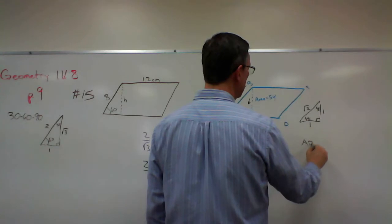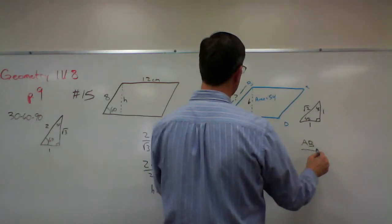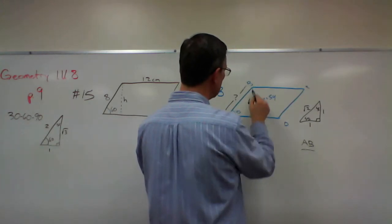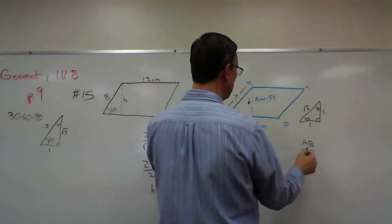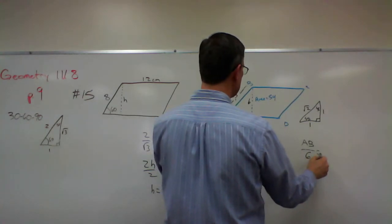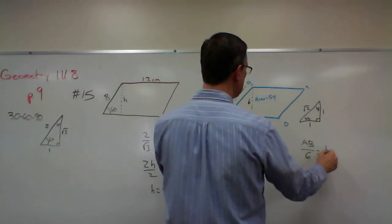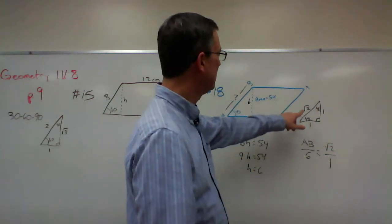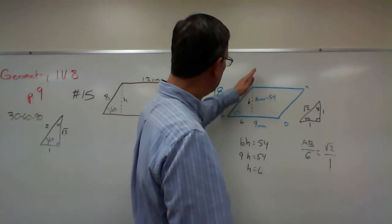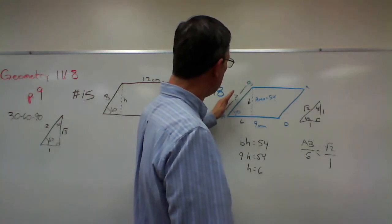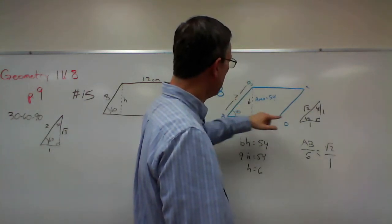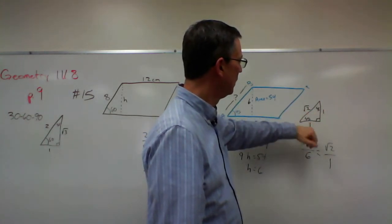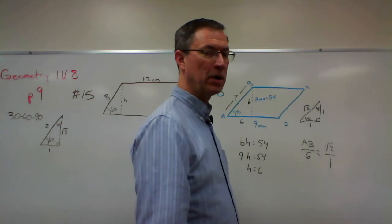Now we can set up a ratio. So AB is to 6—if this is 6, then this is also 6 because these sides are the same—as square root of 2 is to 1. You see that? So we're saying this side here is to one of the legs, as on this triangle, the hypotenuse square root of 2 is to a leg 1. I'm not going to finish that for you.